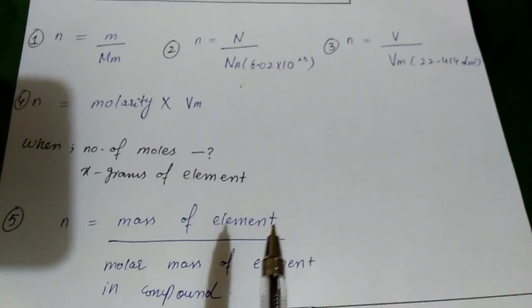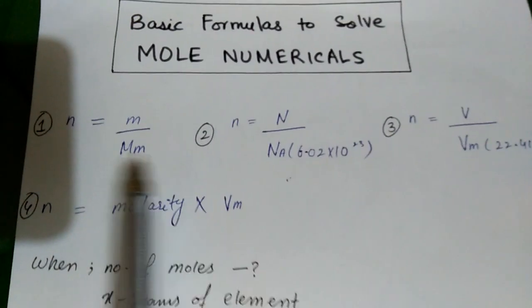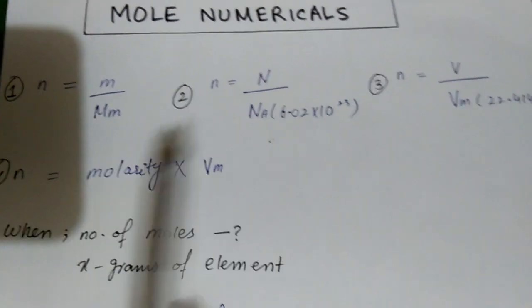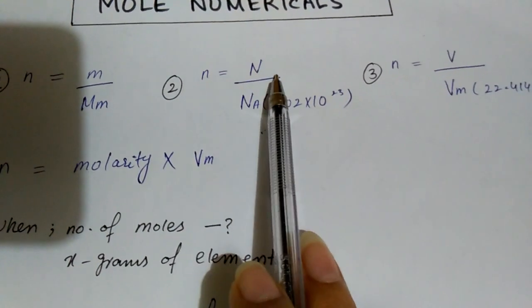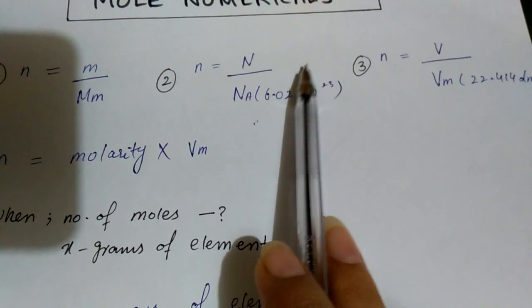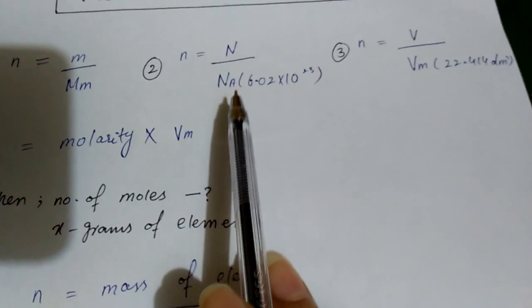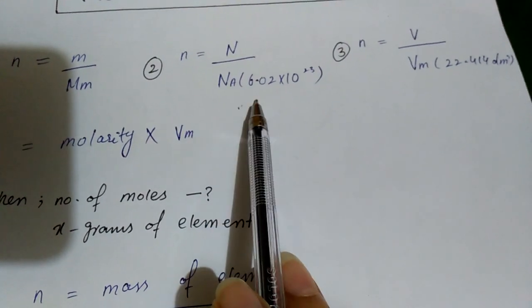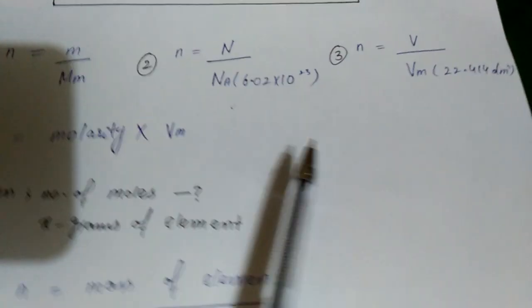So let's see the very first formula: number of moles n is equal to given mass by molar mass. In the second, we are representing number of moles, atoms and ions. We will divide it simply from Avogadro's number and we will get number of moles.